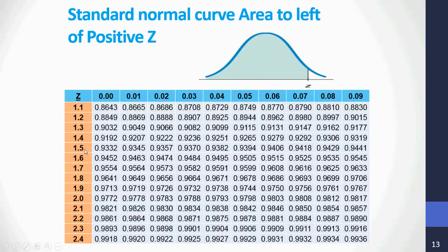The table goes further. What is the area to the left of 1.85? We read 1.8 vertically and 0.05 horizontally. At the intersection, the area to the left of 1.85 is 0.9678. What is the area to the left of 2.22? We read 2.2 vertically and 0.02 horizontally. At the intersection, the area to the left of 2.22 is 0.9868.